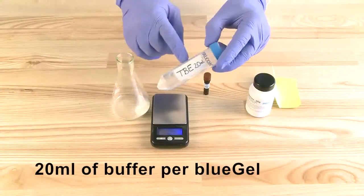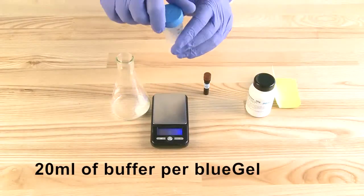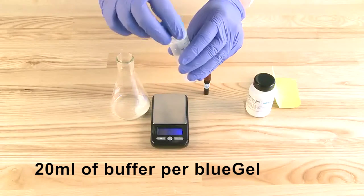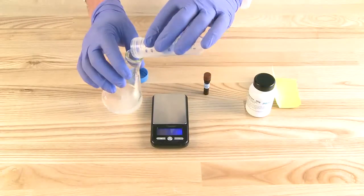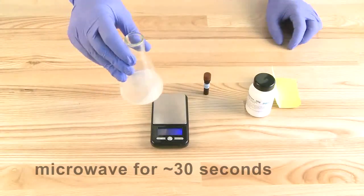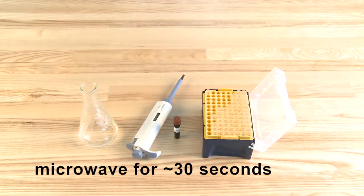Place the agarose in the flask and add 20 milliliters of running buffer. Swirl to mix the agarose. Place in a microwave for approximately 30 seconds or place on a hot plate.